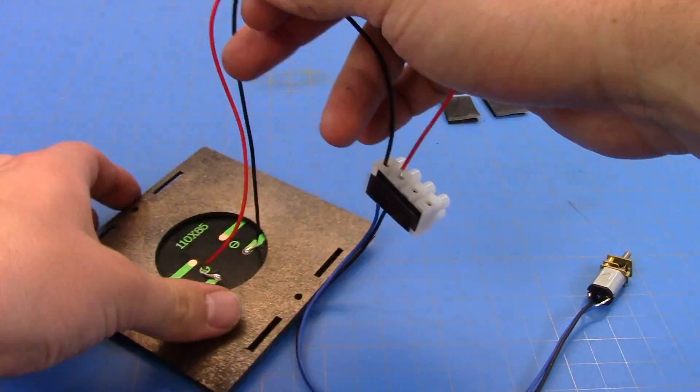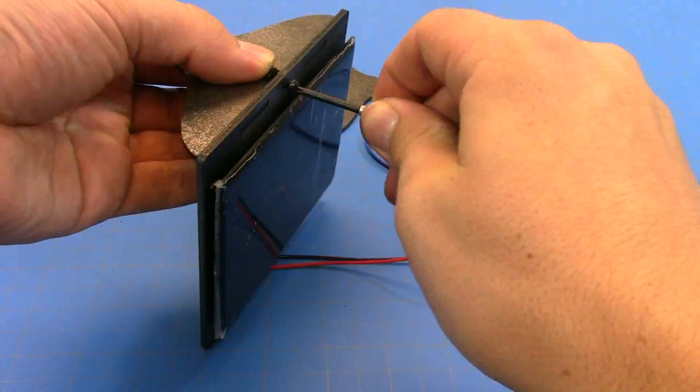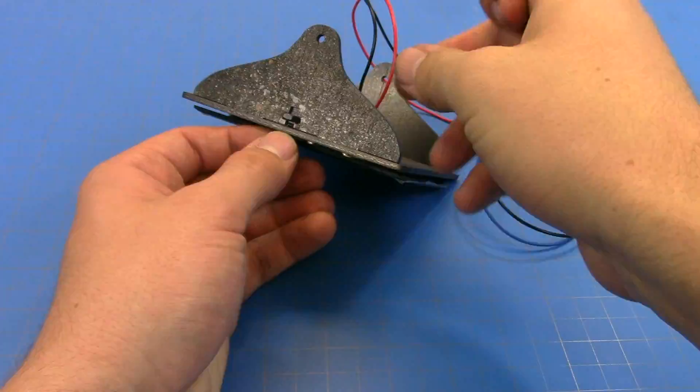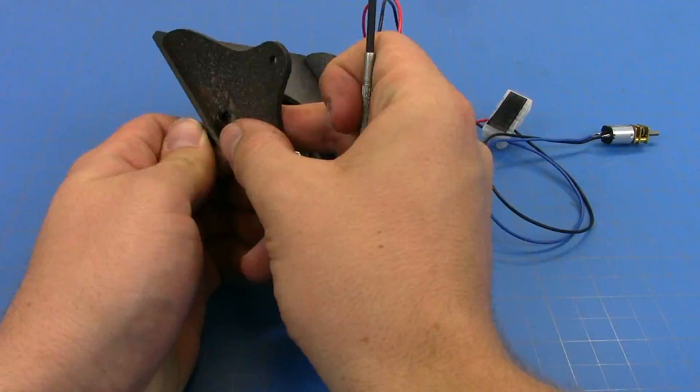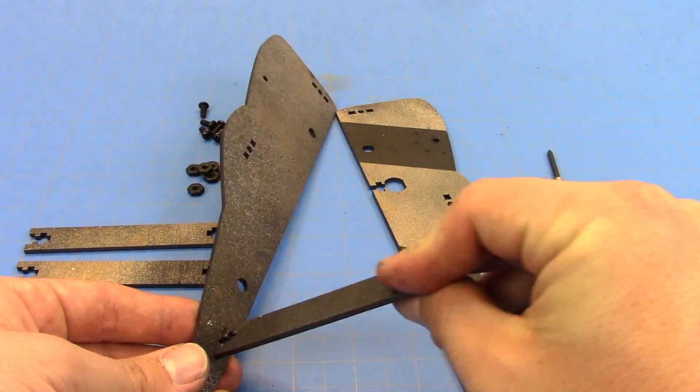Once our paint is dry, we can assemble the chassis of our solar racer. This part is pretty straightforward, so I sped up the video. Feel free to watch multiple times if you need to though.